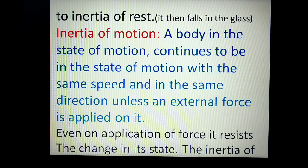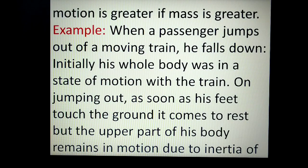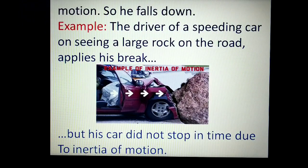Inertia of motion: a body in the state of motion continues to be in motion with the same speed and in the same direction unless an external force is applied on it, and even on application of force, it resists the change in its state. The inertia of motion is greater if the mass is greater. For example, when a passenger jumps out of a moving train, he falls down — initially his whole body was in motion with the train, but on jumping out, as soon as his feet touch the ground it comes to rest, while the upper part of his body remains in motion due to inertia of motion, so he falls. Another example: the driver of a speeding car sees a rock on the road and applies the brakes, but the car does not stop in time due to the inertia of motion of the heavy car.